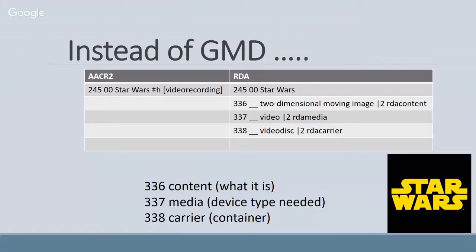That's a lot more information than just seeing 'video recording.' On this example, the 336 field shows it's a two-dimensional moving image — i.e., a movie. The 337 tells us what kind of device is needed — some sort of video device. And the 338 tells us it's a video disc rather than, say, a video tape. So that is more information than just seeing 'video recording,' but it's something that people are not comfortable with today.